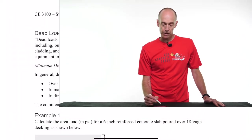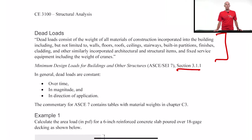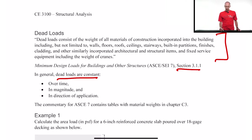We're going to start off by talking about loads on structures, and the first thing we're going to talk about is dead loads. Basically, this is a generic definition from ASCE 7. In general, dead loads are constant — any kind of load that does not change over time, whose magnitude doesn't change, or whose direction of application doesn't change. To find dead loads, you're just looking at the weight of the material.